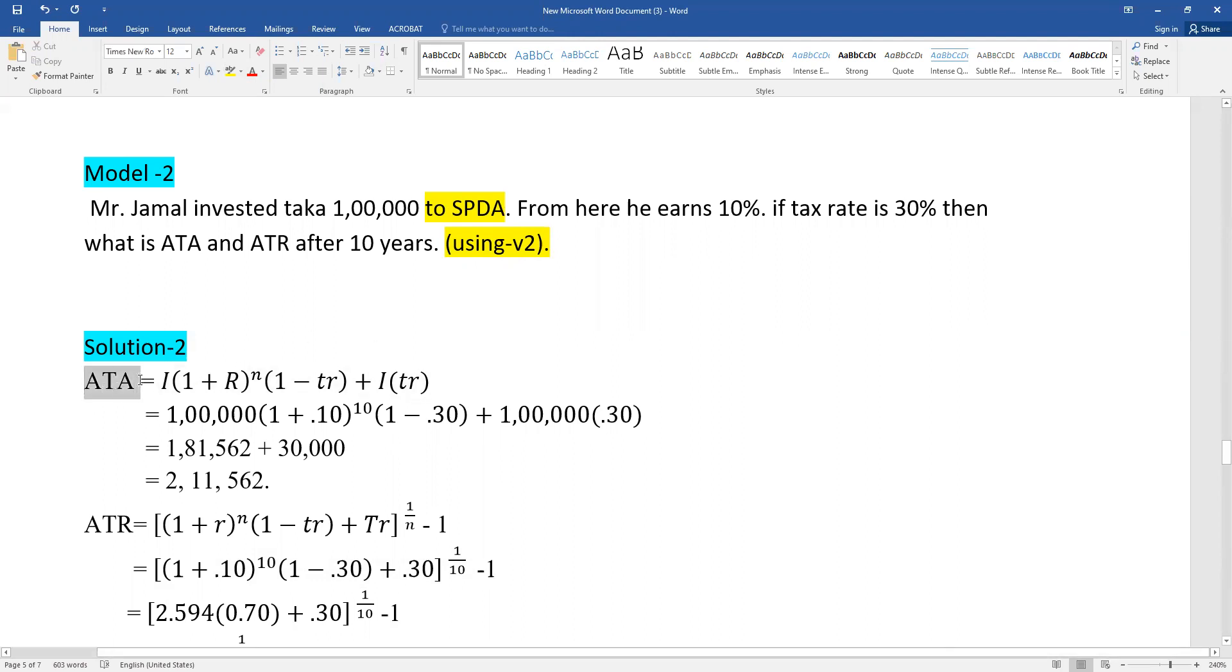To calculate ATA (after-tax accumulation): investment × (1 + r)^n × (1 - TR) + investment × TR. So 1,00,000 × (1 + 0.10)^10 × (1 - 0.30) + 1,00,000 × (0.30) = 1,81,562 + 30,000 = 2,11,562. The investment is 1 lakh, rate of return is 10%, n is 10, and tax rate is 30%.